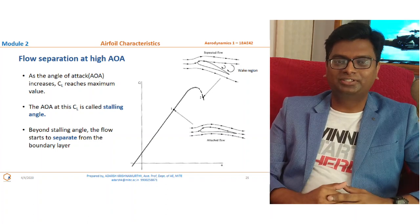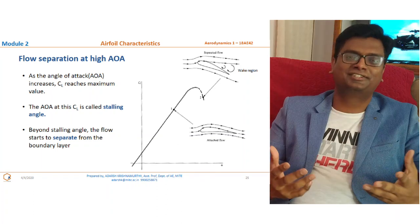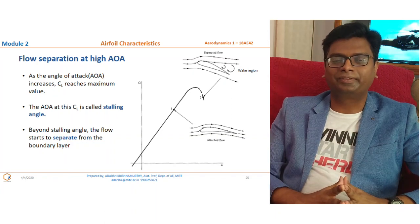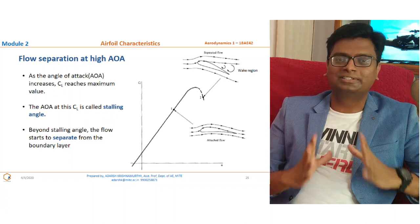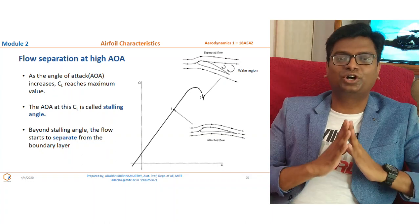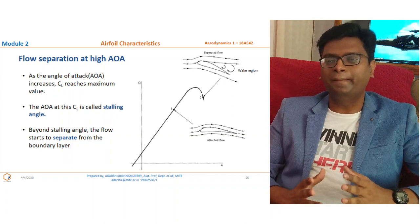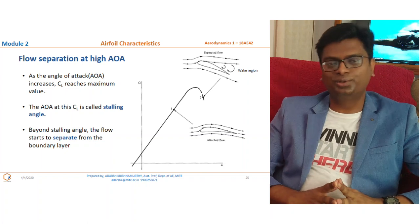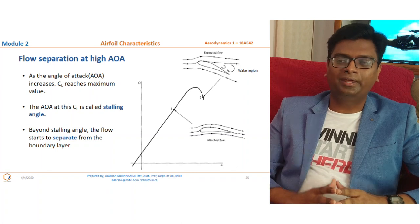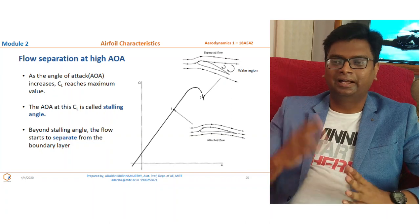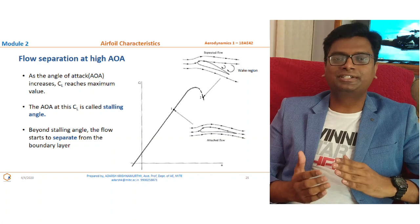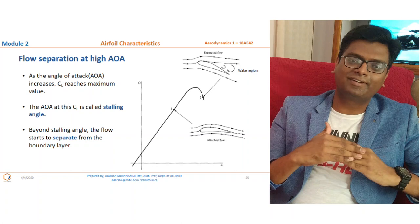The eventual result is that the flow just leaves the surface because it has no energy left to overcome the friction. This phenomenon is called flow separation. It happens at an angle of attack called the stalling angle, at which the coefficient of lift will be maximum. Beyond the stalling angle — at point two on the graph — the flow is getting separated from the upper surface as early as 20% of the chord.